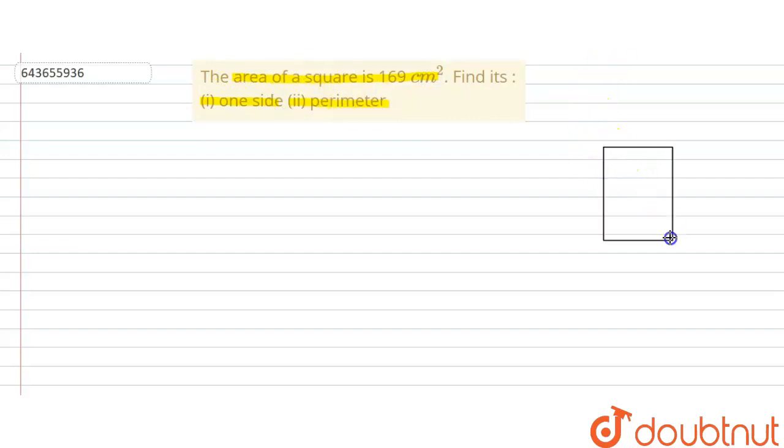First we draw a square. This is a square. Let the side of square be x. The side is x.